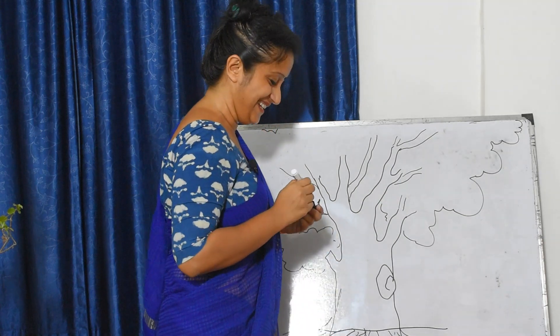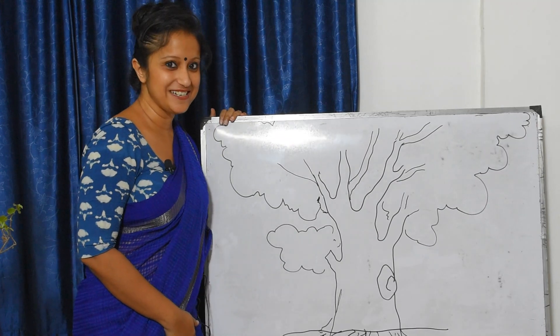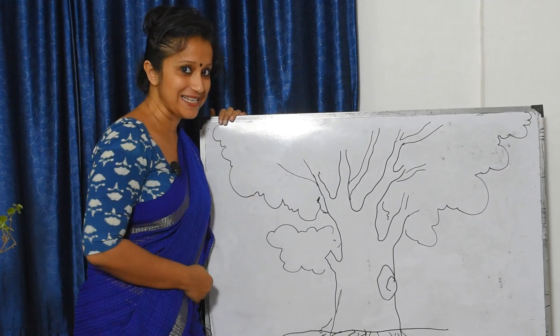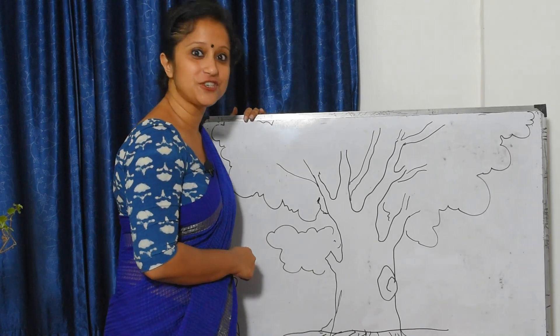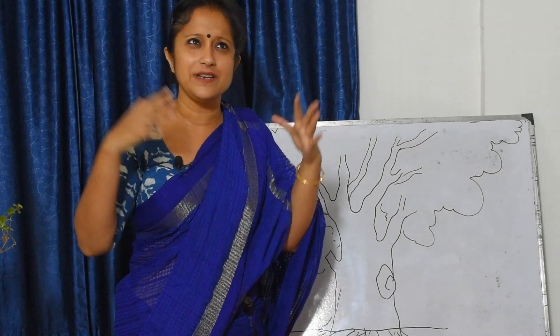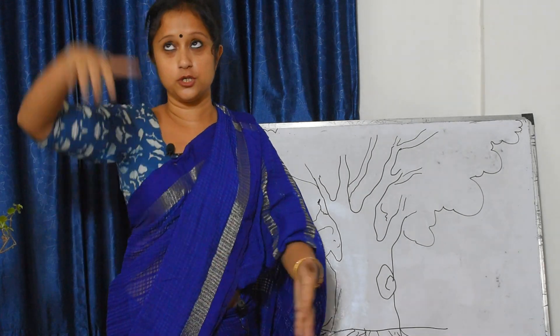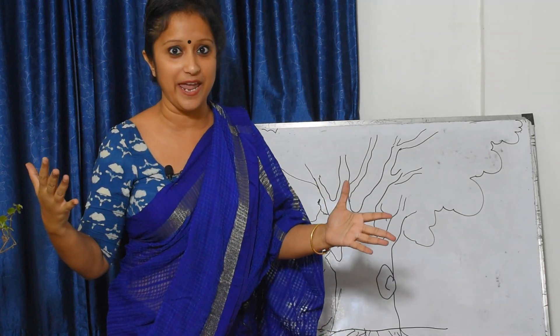Hi children, you are already here. Very good. Children, do you know what is this? This is a tree. Right? Children, definitely you have seen different kinds of plants around us. Some are tall, some are short, some are big and some are small.